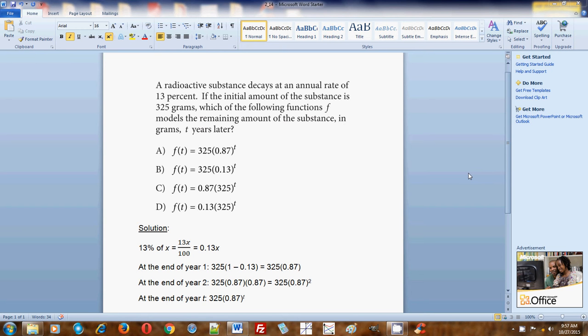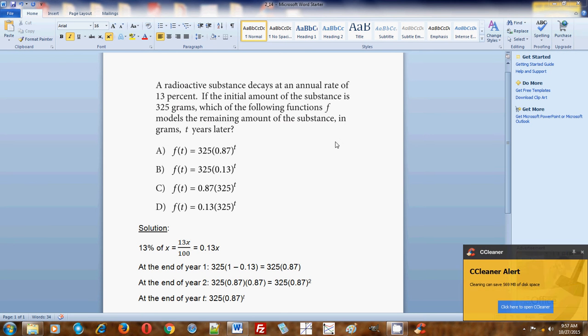Okay, so this is an exponent problem. A radioactive substance decays at an annual rate of 13 percent. If the initial amount of the substance is 325 grams, which of the following functions f models the remaining amount of the substance in grams T years later?